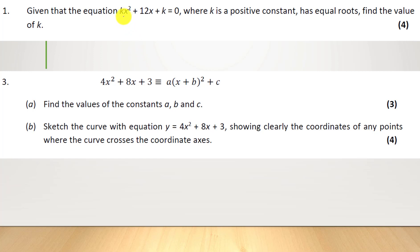Now we have kx² + 12x + k = 0, where k is a positive constant and has equal roots, find the value of k. When we see equal roots in a question, we need something called a discriminant, and that's an important skill to remember, and that is b² - 4ac equals zero when it has equal roots.